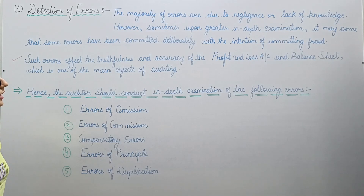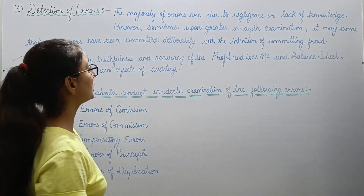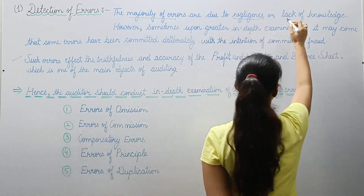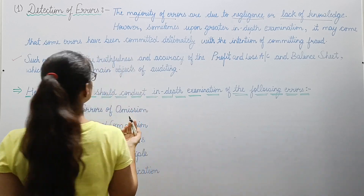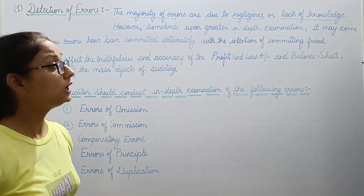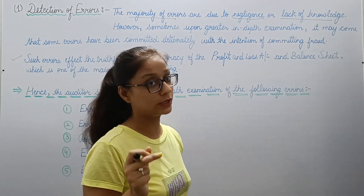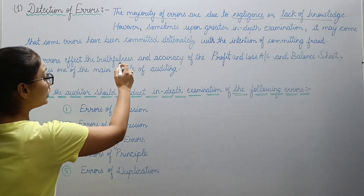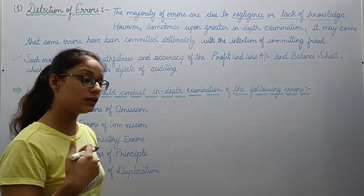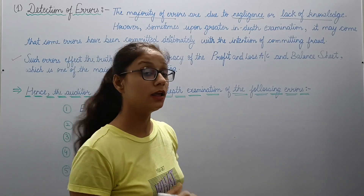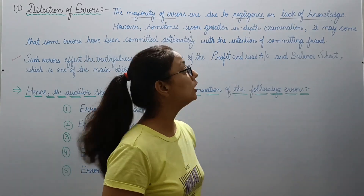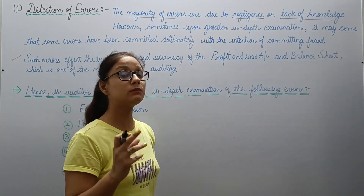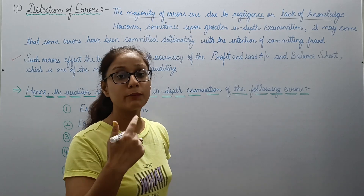Under detection of errors, the majority of errors arise due to negligence or lack of knowledge — lack of knowledge of the person who is doing accounting or recording. If they don't have knowledge, an error can happen, or they are making mistakes due to negligence. However, sometimes even after thorough in-depth study, we find some small error — because it was committed with great cleverness, so it won't be visible to you quickly.